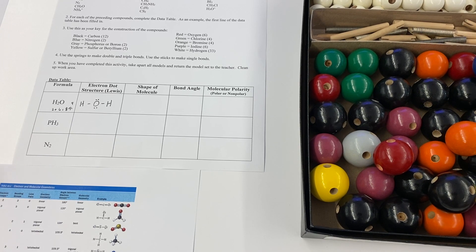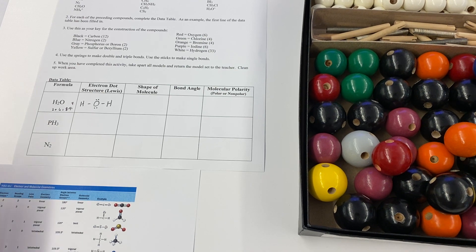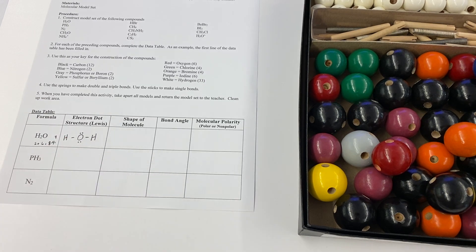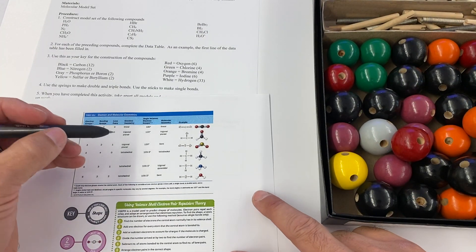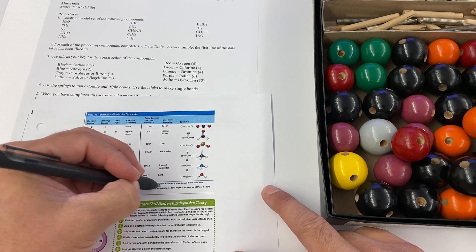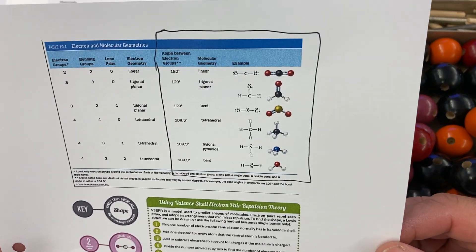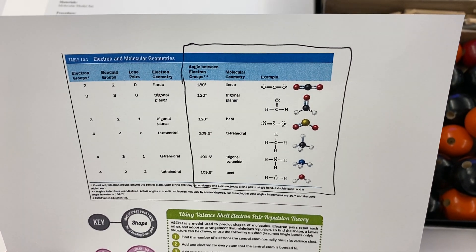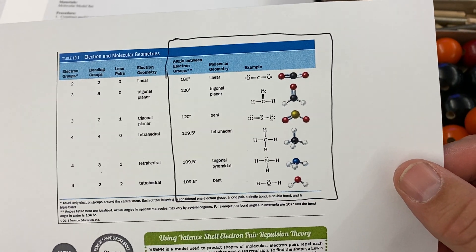This is part two for students who got the instructions in class but don't have a model set because they're at home. We're going to start building molecular models. You'll need your molecular model lab and your reference sheet. On the reference sheet, focus on the angles, molecular geometry, examples, and pictures — that part will help you figure out what the shapes are.